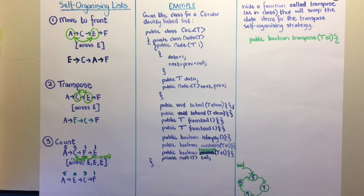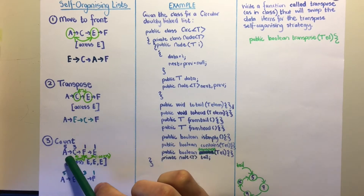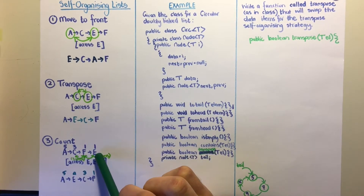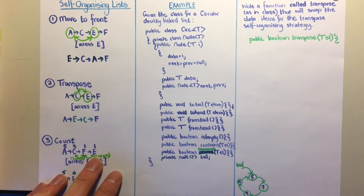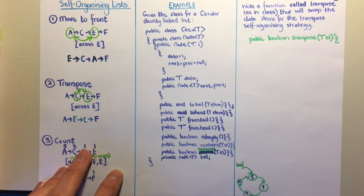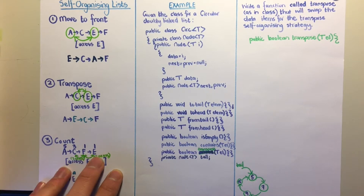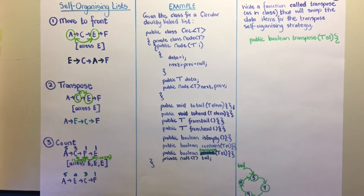The count method counts the number of times each element is accessed. This is the most accurate method for determining which element should be at the front of the list — the one accessed most — and which should be at the back. For example, if E is accessed twice and F only once, E and F will be swapped.